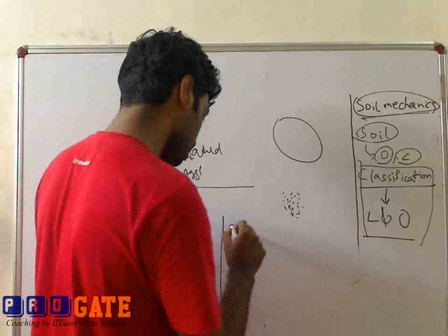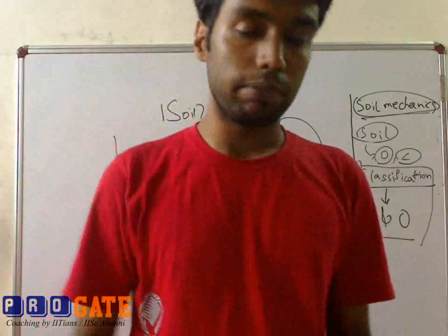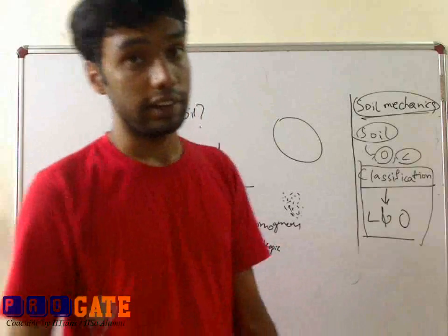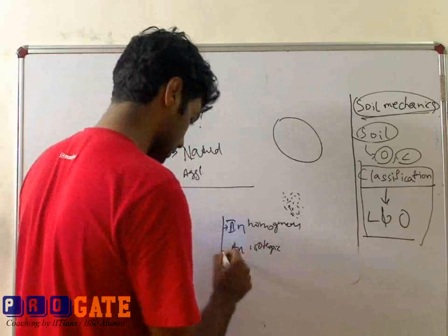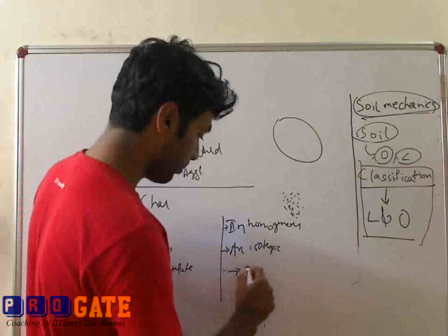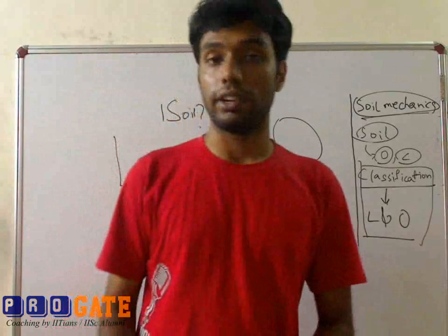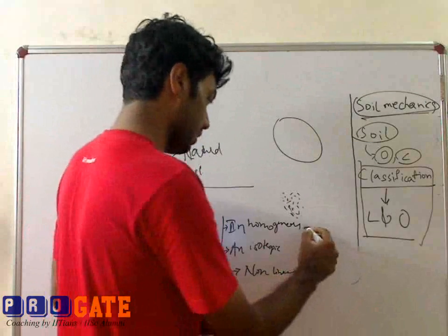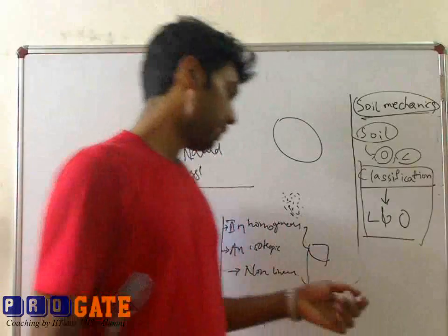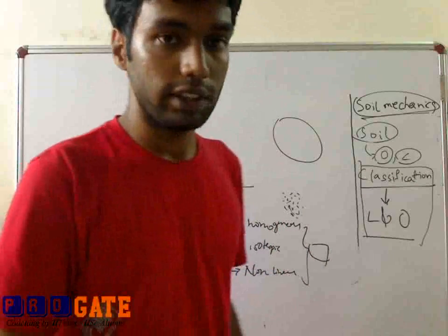Soil is inhomogeneous — that means soil has different characteristics in different places. Soil is anisotropic — characteristics are different in different directions. And next, soil is non-linear. Linearity means stress is proportional to strain, but soil is a non-linear material; there is no straightforward relationship between stress and strain. Even though we may assume otherwise in many of our analyses just to simplify, the fact remains that soil is inhomogeneous, anisotropic, and non-linear.